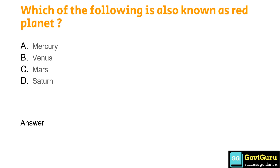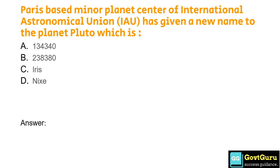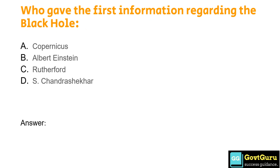Which of the following is also known as the red planet? Option A: Mercury, Option B: Venus, Option C: Mars, Option D: Saturn. The correct answer is Option C, Mars. The Paris-based Minor Planet Center of the International Astronomical Union (IAU) has given a new name to the planet Pluto, which is: Option A: 134340, Option B: 238380, Option C: Iris, Option D: Nixay. The answer is Option A, 134340.